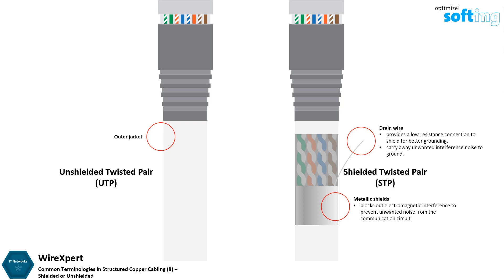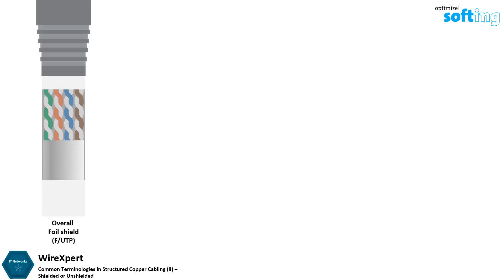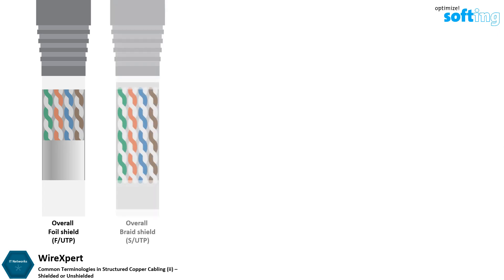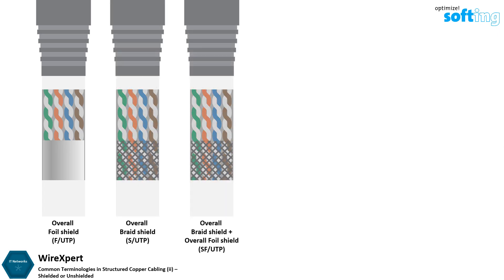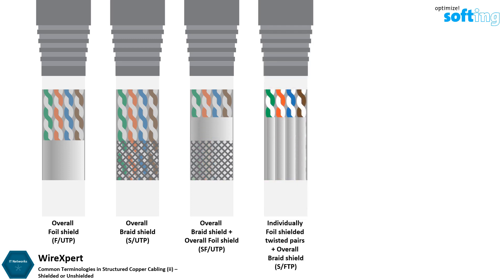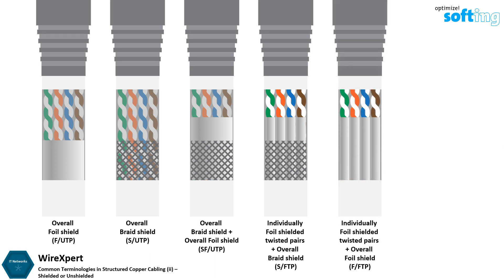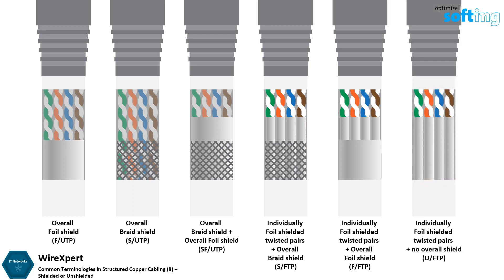The main purpose of a drain wire is to carry away unwanted interference noise to ground. There are a few types of STP cables, such as: UTP with an overall foil shield, UTP with an overall braid shield, UTP with overall braid shield and overall foil shield, individually foil shielded twisted pairs with an overall braid shield, individually foil shielded twisted pairs with an overall foil shield, and individually foil shielded twisted pairs with no overall shield.